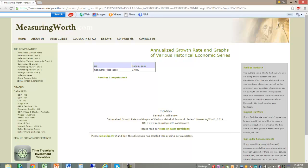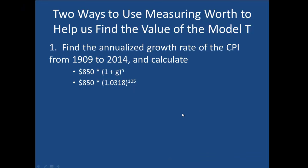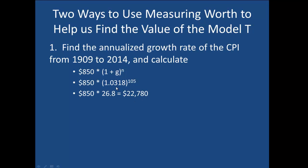So let's go back to our formulas. Now I have plugged in 3.18%, which in decimal terms is 0.0318, into our formula for the growth rate. I've also added 105 for N, the number of years we want to compound that increase in prices. If you plug that into your calculator, the result is 26.8 — meaning prices in 2014 are about 26.8 times higher than they were in 1909. Multiplying that by $850, we get $22,780, something similar to what a basic small car would cost today.